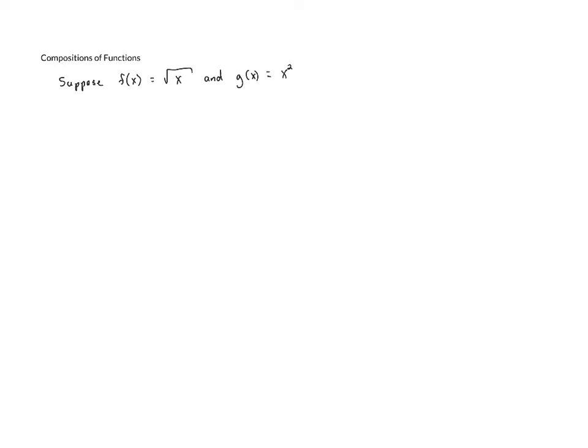So let's start and look at an example. We'll suppose that f of x equals the square root of x and g of x equals x squared plus one. Now we can define a new function h of x by saying that h of x is f of g of x.